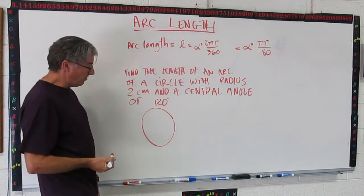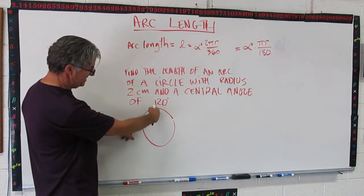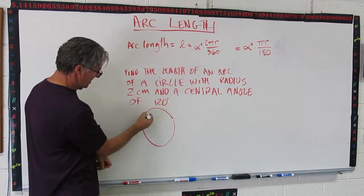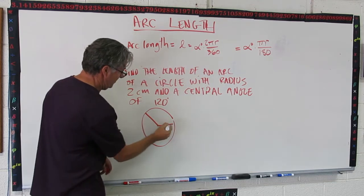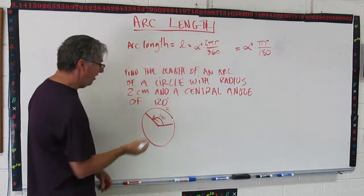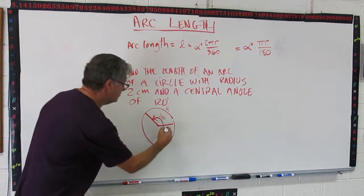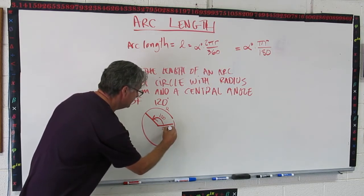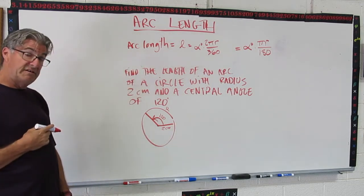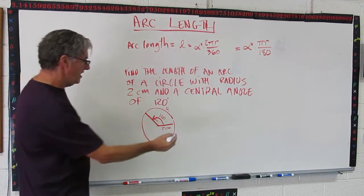Here we go. There's my full circle. 180 is here. 90 is there. 120 is right there. So we're going 120 degrees like that. This is L. That's my arc length. It's the length of that arc. And my radius is 2 centimeters. So that's a diagram of this problem. So now let's find our L.